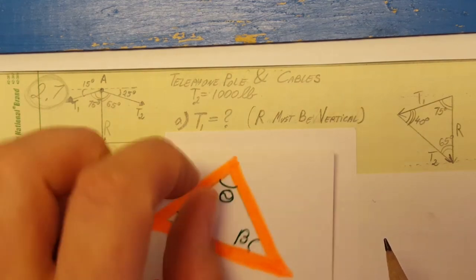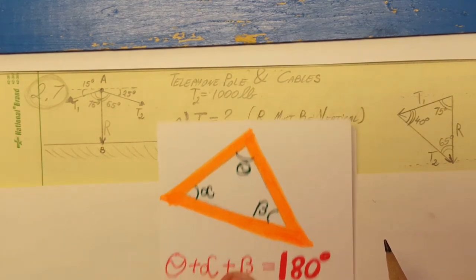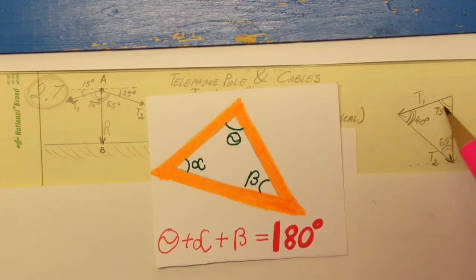For the third one, we're going to use this rule from trigonometry where the three angles sum up to 180 degrees. 180 minus 65 minus 75 gives us a value of 40 degrees for this angle right here.